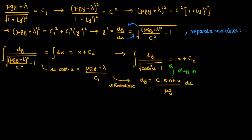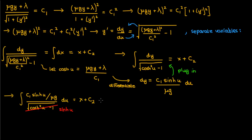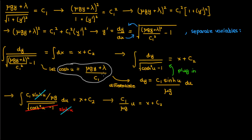Both hyperbolic sines cancel, so we just need to integrate c1 over mu g with respect to u. This gives c1 over mu g times u, which equals x plus c2. We know from the substitution that cosh u equals (mu g y plus lambda) over c1, so isolating for u gives u equals the inverse hyperbolic cosine of (mu g y plus lambda) over c1.